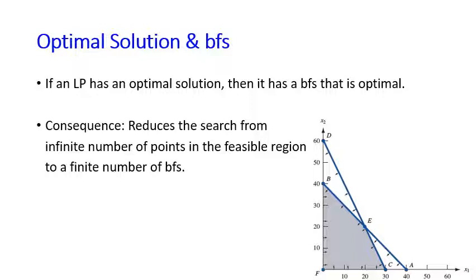You may wonder why we care about basic feasible solutions. The key result is: if an LP has an optimal solution, then it has a BFS that is also optimal. This means we do not need to check all the infinite points in the feasible region — we only need to check the BFS. For graphical solutions we check extreme points, but with more than two variables we use the BFS concept since we cannot visualize extreme points directly.